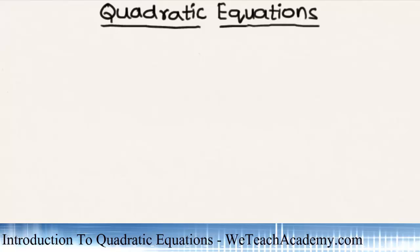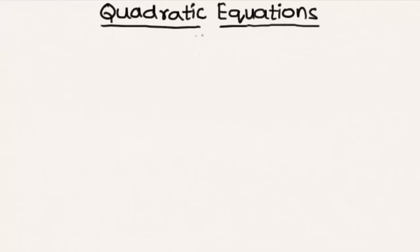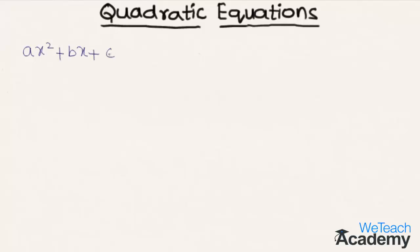Welcome to vtchacademy.com. In this presentation we are going to discuss quadratic equations. First, let us consider a quadratic expression ax² + bx + c. If we equate this expression to zero, where the coefficient of x² — that is, a — is not equal to zero, then we call this a quadratic equation.